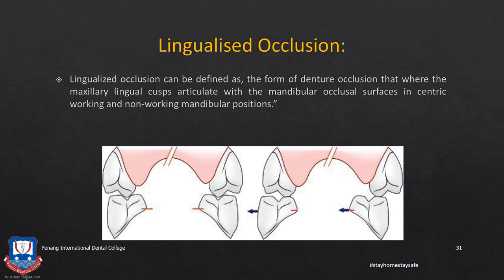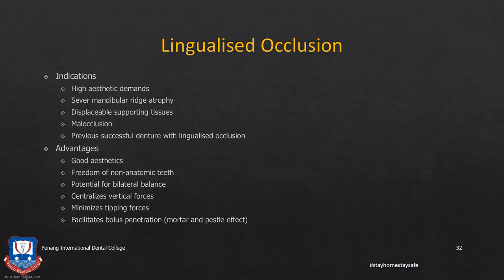Coming to lingualized occlusion: it can be defined as a form of denture occlusion where the maxillary lingual cusps articulate with the mandibular central occlusal surface — that is, with the central fossa — in centric, working, and non-working mandibular positions. In centric relation or centric occlusion only the palatal cusp of the maxillary teeth articulates with the central fossa of the mandibular posterior teeth. During left and right lateral excursive movements of the mandible, the palatal cusp of the maxillary denture teeth remains in contact with the occlusal surface of the mandibular posterior teeth, thereby creating a sort of balanced occlusion.